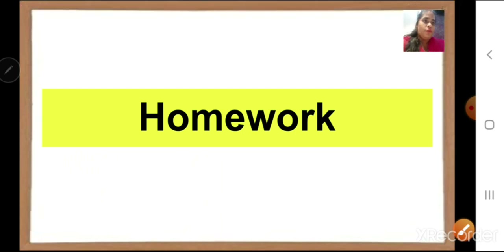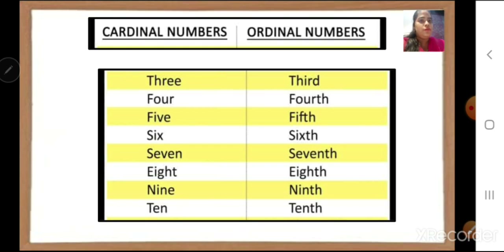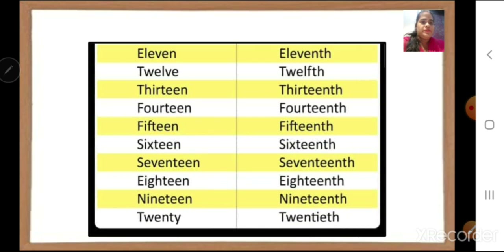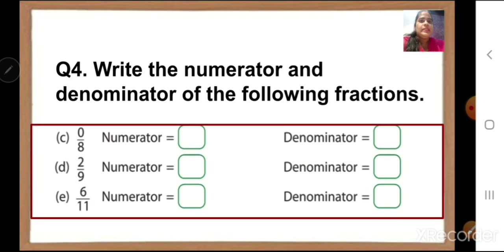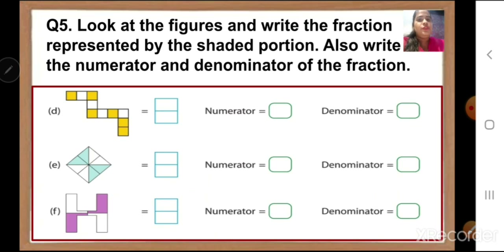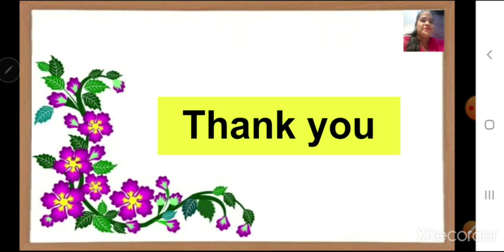Now it is time for homework. For your homework, you are going to write the cardinal numbers and ordinal numbers in your homework notebook, till 20. Then, from question number four, write the numerator and denominator in your textbook for C, D and E. From question number five, do D, E and F. Thank you, children. Happy Diwali to you all.